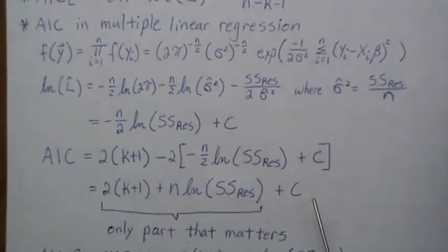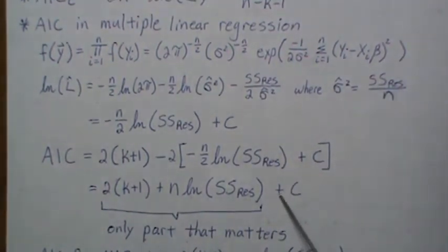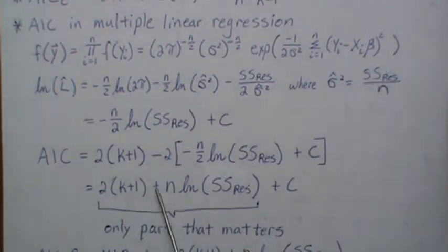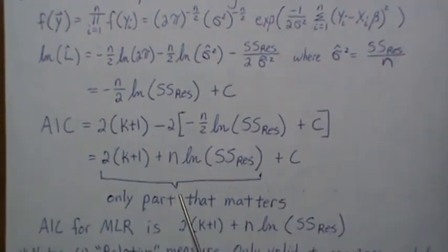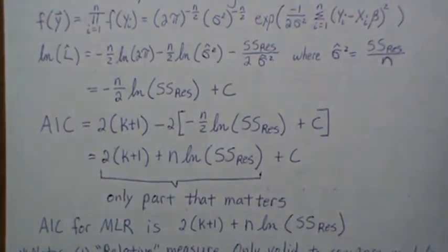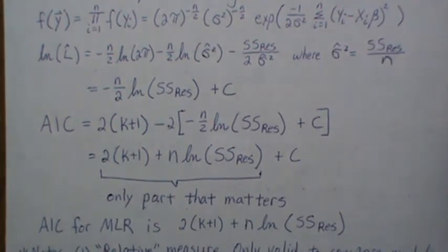This minus 2 can be distributed in here and we get this. But notice that the C doesn't change for any model we pick—this is constant. It's these values that change. This is, in a sense, in the multiple linear regression setting, the only things that matter. That's what they call the AIC for multiple linear regression, this piece here. What's interesting is it's truly not the AIC value, but it's the only value that matters, so as long as you use the same computer system that does it consistently, then you should be good.